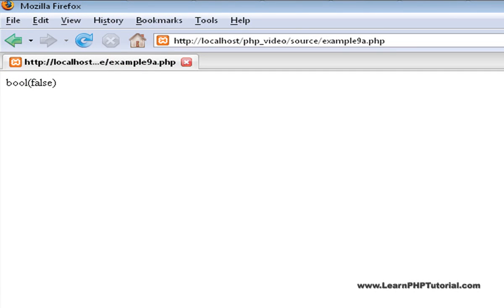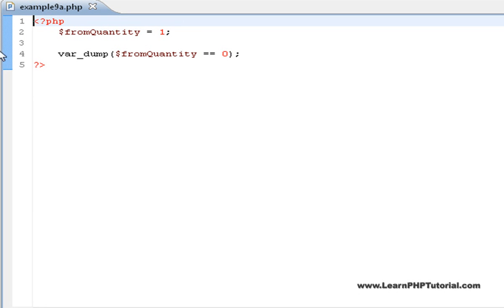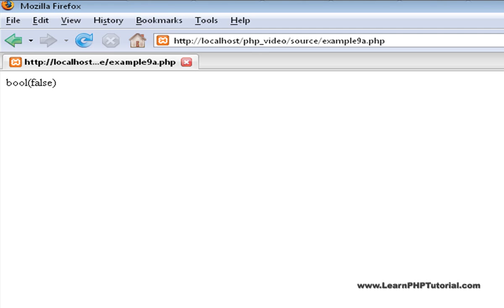With this modified line, the browser shows us more what we'd expect, that the result is false. We can confirm that it works the other way around by changing the value we're comparing to to the same one that from quantity was initialized to. Refreshing the page in the browser, we see that now the result is true.